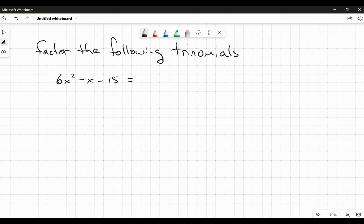And so we're looking at 6x squared minus x minus 15. And again, the method I'm going to use here is just going to be guess and check, because I think that's, for the most part, for a lot of the high school math, that's the quickest way to do it.